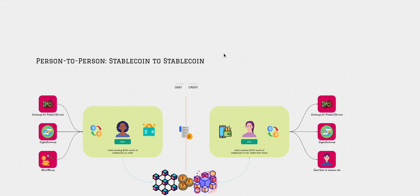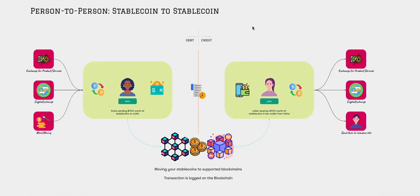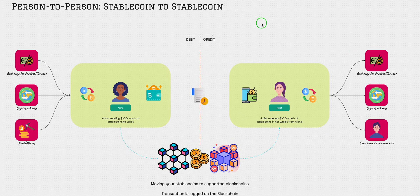The first very simple basic example is a person-to-person stablecoin transfer. So let's say there's Aisha and she wants to send a hundred dollars worth of coins to Juliet. How does Aisha actually get the stablecoins? She could sell or exchange them for products or services, she could go and buy from a crypto exchange, or she could mint or mine some other coins, convert them into a stablecoin. That's how she gets it in her wallet.